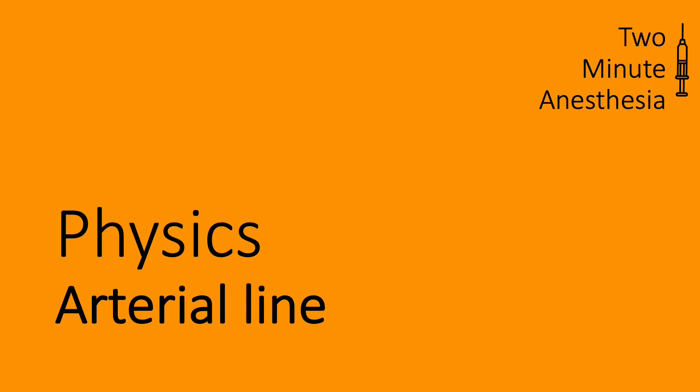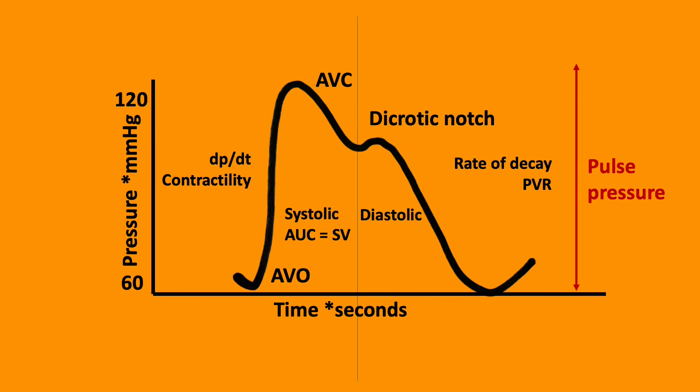Tumour anaesthesia arterial line. This is the classic arterial line waveform. The Y axis is pressure and the X axis is time.